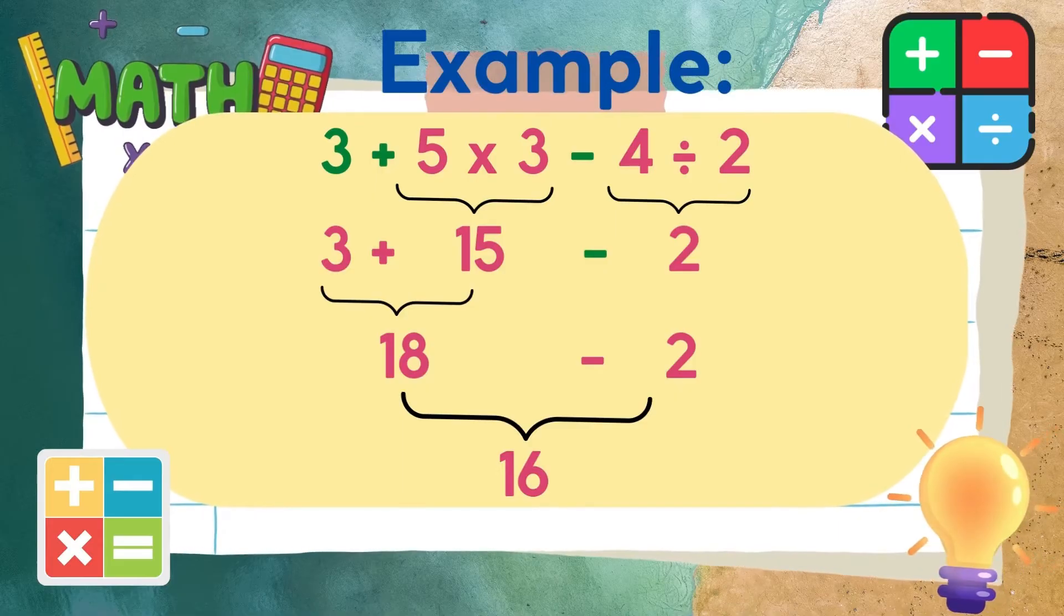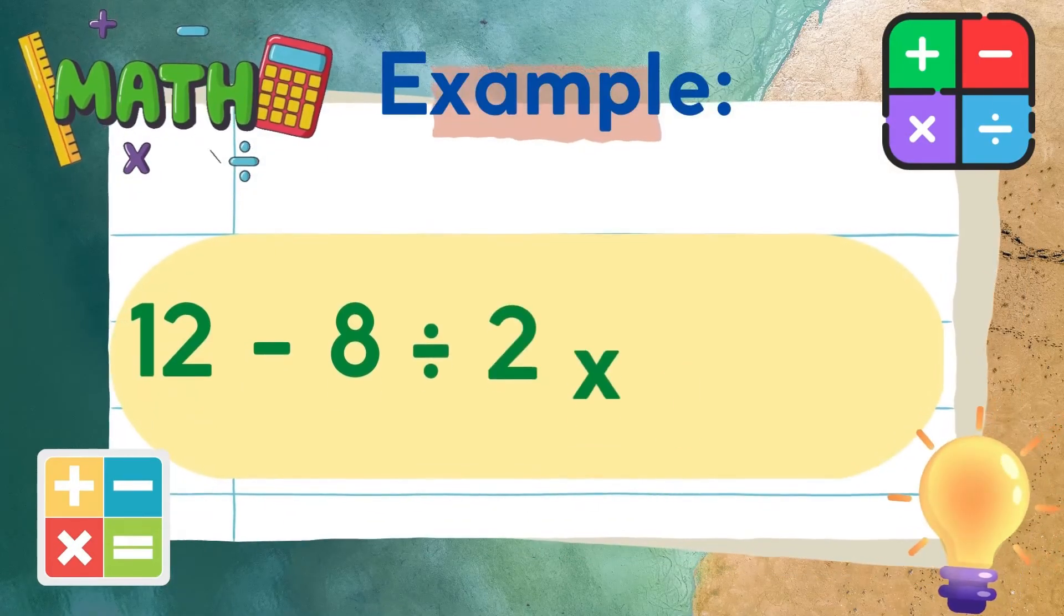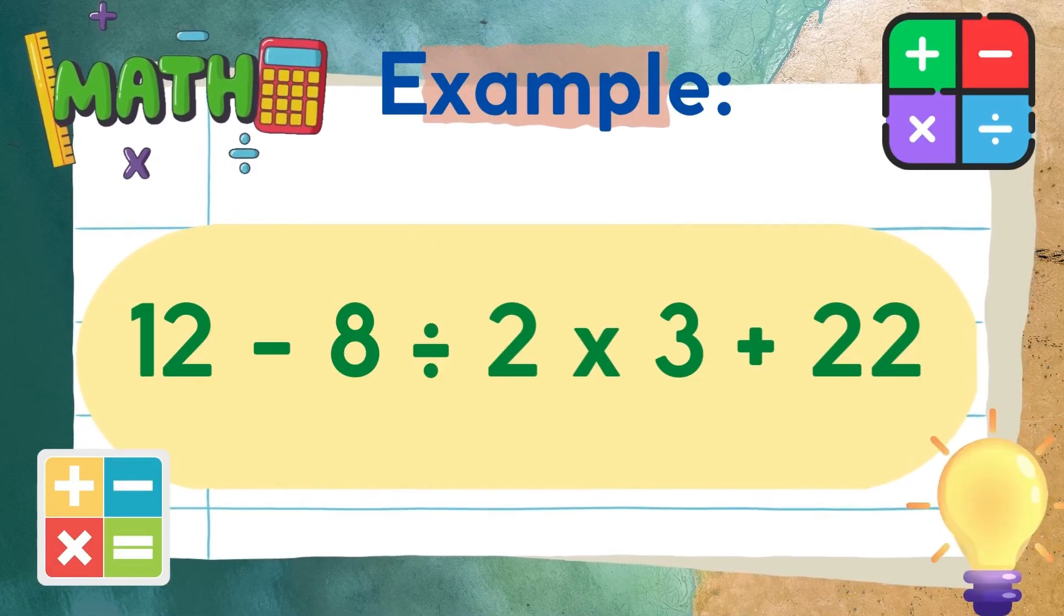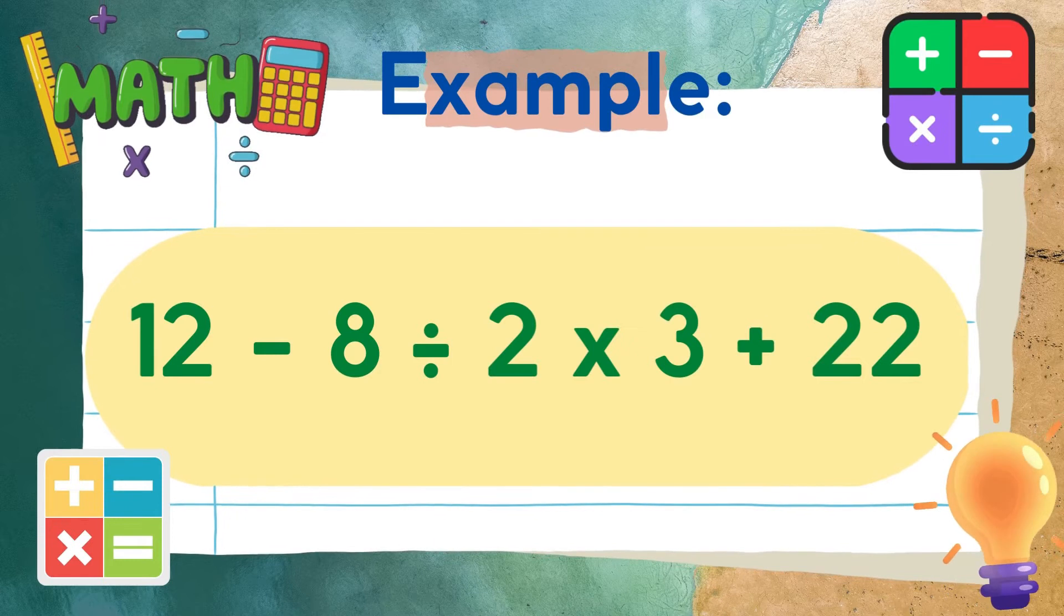Okay, let's have another example. We have 12 minus 8 divided by 2 times 3 plus 22. Always remember the rules.